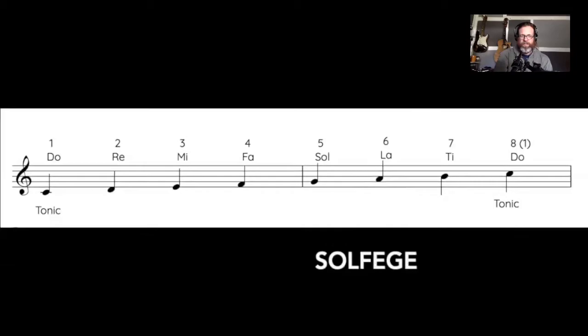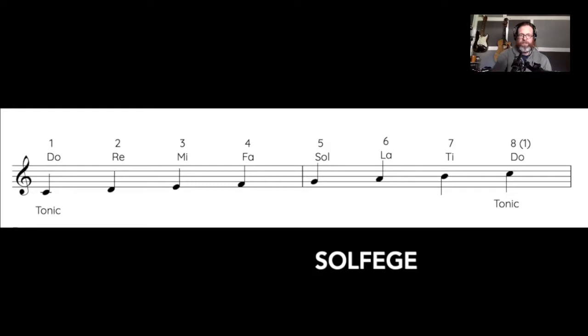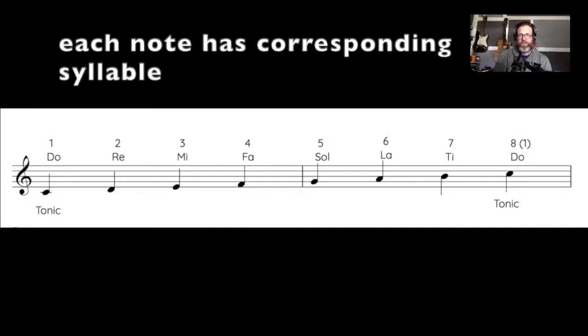So briefly, solfege is a system where each note has a corresponding syllable attached to it. I'm sure you've heard 'Doe, a deer, a female deer,' or even maybe sung through the major scale using solfege syllables: do, re, mi, fa, sol, la, ti, do. These syllables are a great way to help you wrap your ears around the tonality of the major scale and other scales as well.